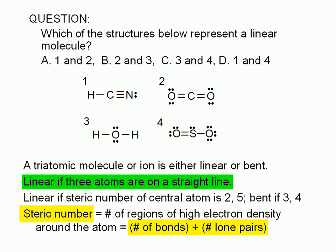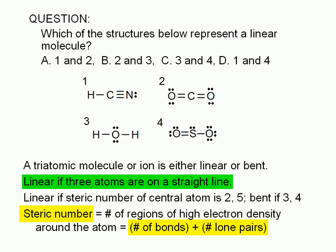So let's examine the structures shown here. The central atoms for our four structures are carbon for hydrogen cyanide, carbon for carbon dioxide, oxygen for water, and sulfur for sulfur dioxide. Now let's determine the steric number. For the carbon atom in structure 1, the steric number is 2.